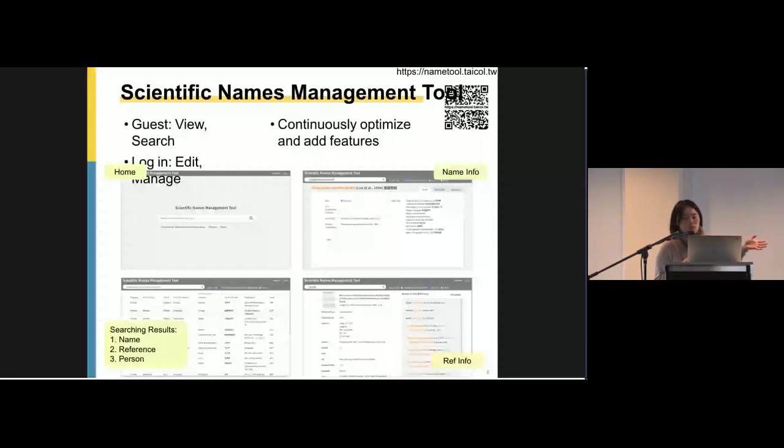Also, now the tool is open for using. And if you want to try, you can scan and use the URL. And here are some captures of this tool. We call it scientific names management tool. This tool has guest mode and login mode. As guest, you can view and search for name, reference, and person. There will be more details in the information page of each of them. Users can register and login, then can use edit and manage. The tool is under continuously optimizing and will be added more features to make it easier to use.